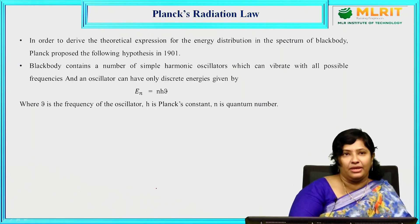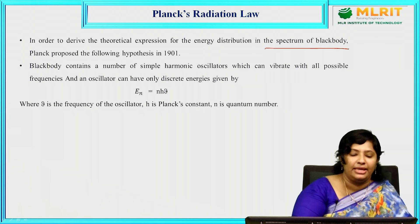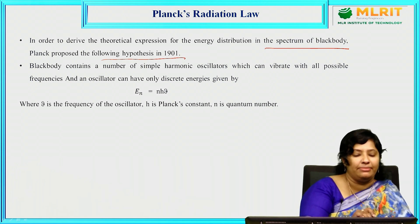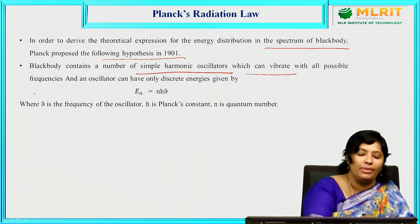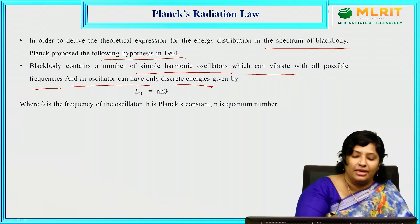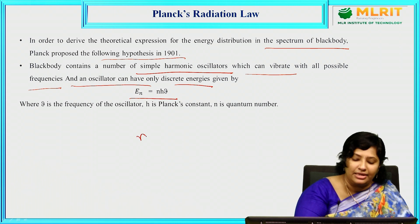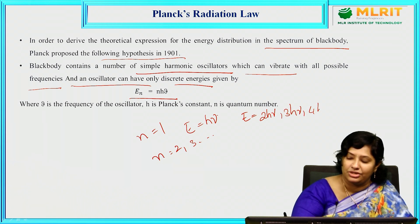Planck's radiation law: in order to derive the theoretical expression for energy distribution in the blackbody spectrum, Planck proposed the following hypothesis in 1901. The blackbody contains a number of simple harmonic oscillators which can vibrate with all possible frequencies, and an oscillator can have discrete energies given by Eₙ = nhν. For n=1, E = hν; for n=2, E = 2hν; for n=3, E = 3hν, and so on.